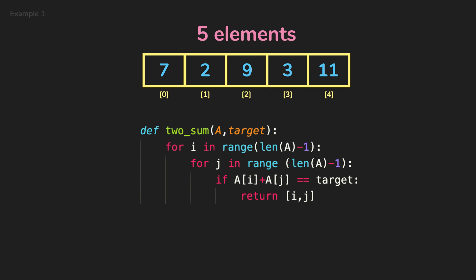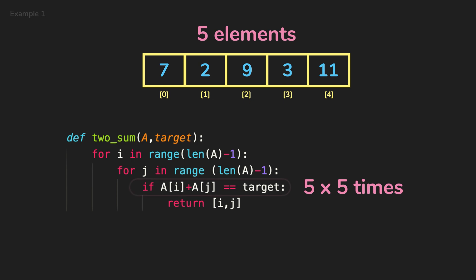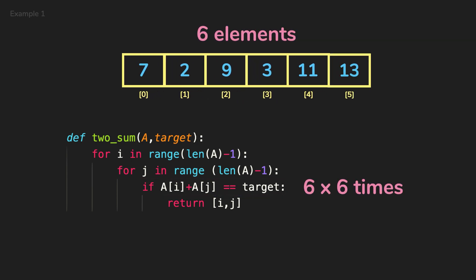If there are five elements in the array, in the worst case, this line will be executed 25 times. If there are six elements, then six times six, 36, 36 times, and then so on.